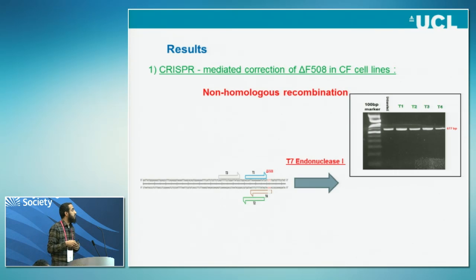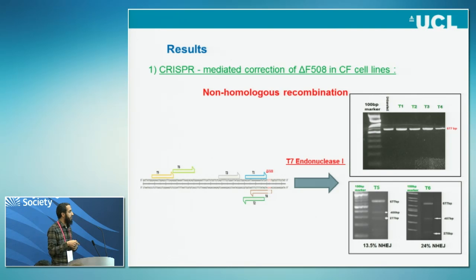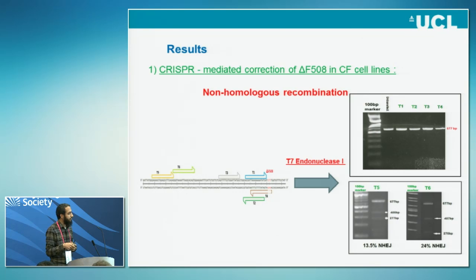Moving to the results: for the CFB cell line, which has the delta-F508 mutation in both alleles, we designed four guide RNAs nearest to the delta-F508 mutation, and we used the plasmid PX330. After 48 hours, we extracted the cells and did the T7 endonuclease assay. However, we couldn't detect any indels. So we designed other guide RNAs that are farther from the delta-F508 mutation, and they seem to work very well. Target 5 is making around 13.5% indels, whereas target 6 is making around 24%.